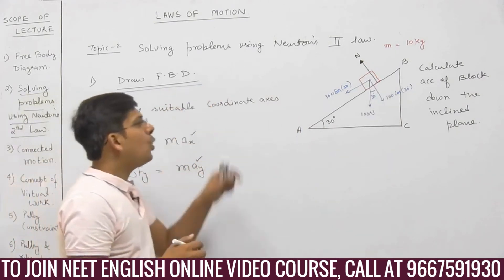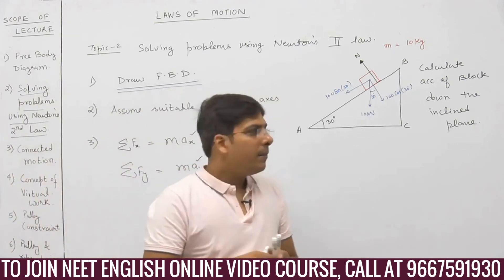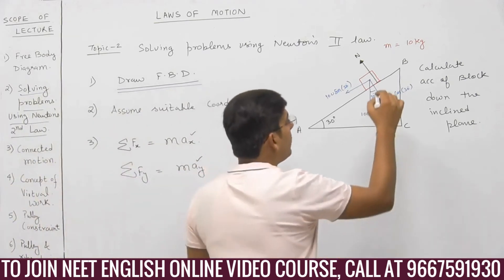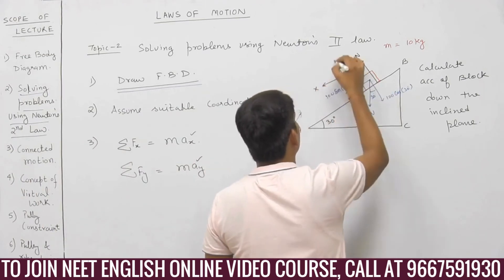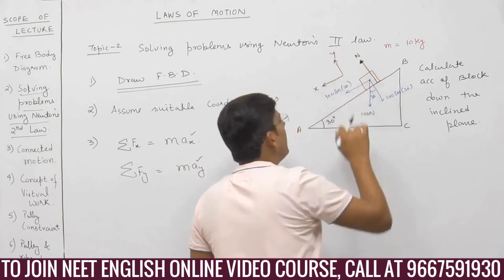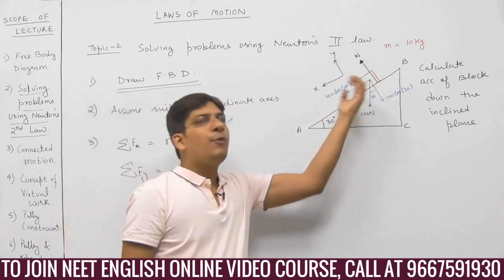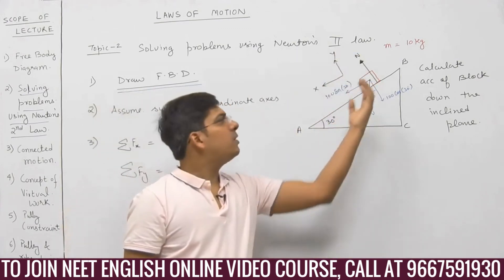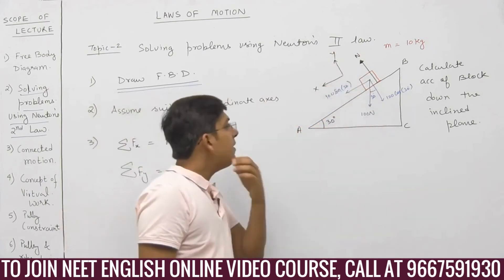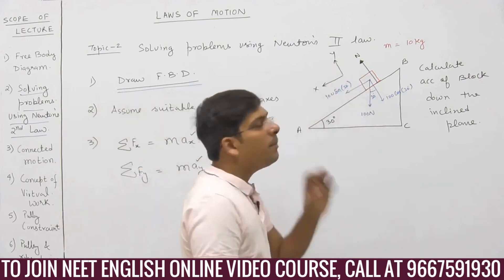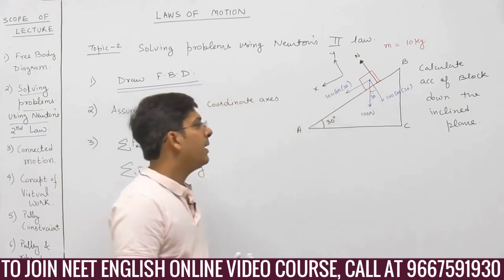I have drawn the FBD. Now I have to assume a suitable coordinate axis. Let us assume the coordinate axis this way — this is the x axis and this is the y axis — making it easy to take forces along the incline and perpendicular to the incline. If we choose the conventional x and y axis, the problem becomes difficult as we have to resolve forces again and again.